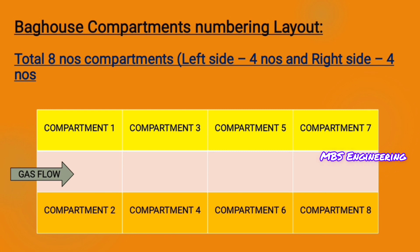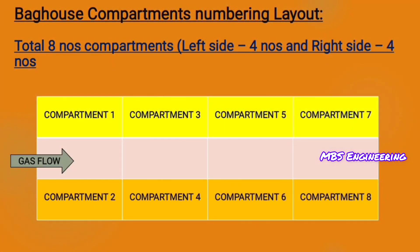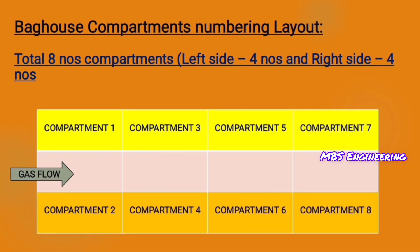Next, we look at the bag house compartments numbering layout. As per the layout, the bag house has a total of 8 compartments: the left side has 4 compartments numbered 1, 3, 5, and 7, and the right side has 4 compartments numbered 2, 4, 6, and 8. Assuming all compartments are in operation, what is the air-to-cloth ratio for this condition?